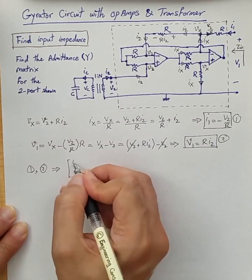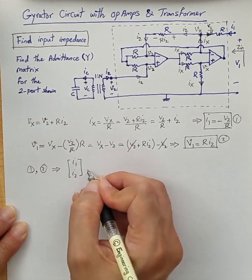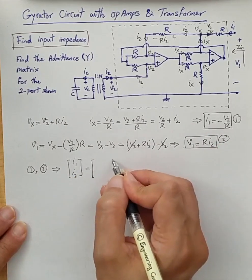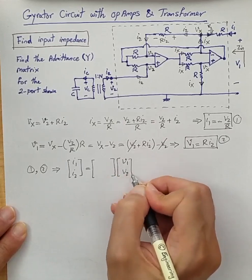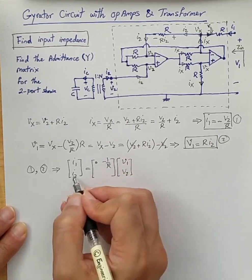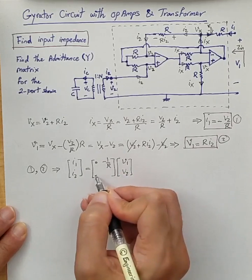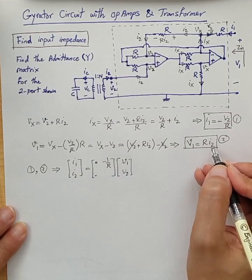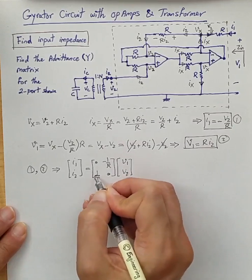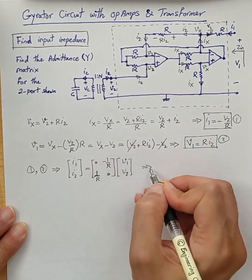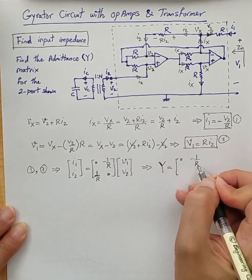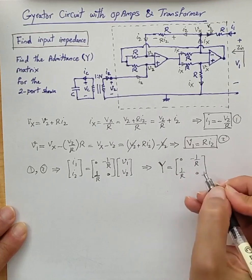With these two outcomes we can write the relationship between the port currents and voltages. I1 depends only on V2: I1 = -V2/R, i.e., the (1,2) admittance parameter is -1/R. I2 depends only on V1: I2 = V1/R, i.e., the (2,1) admittance parameter is +1/R. We have found the admittance matrix, and this is the classic gyrator admittance matrix with gyration coefficient 1/R.